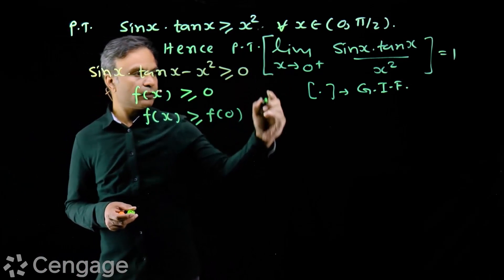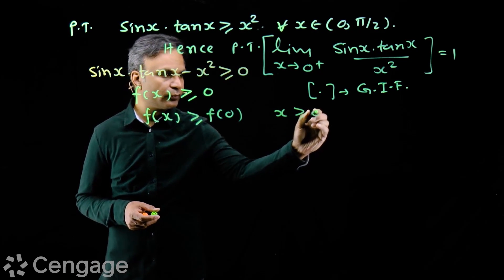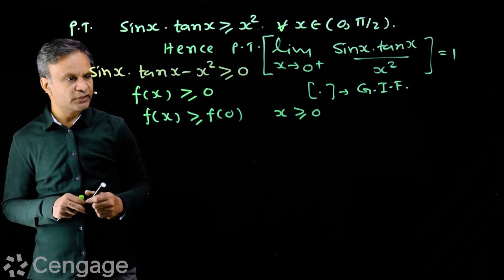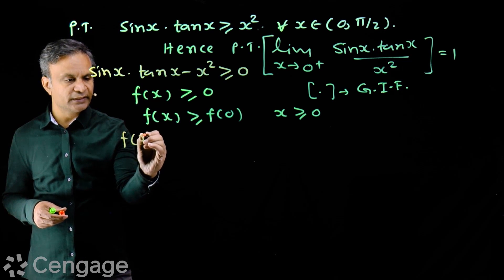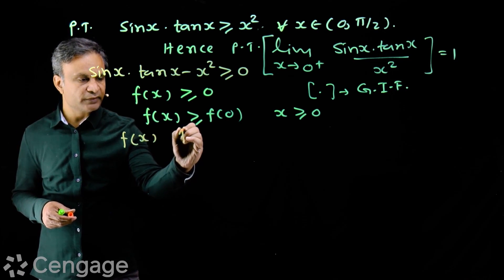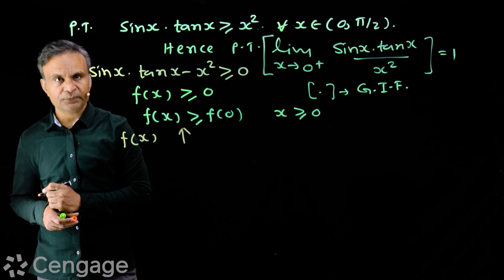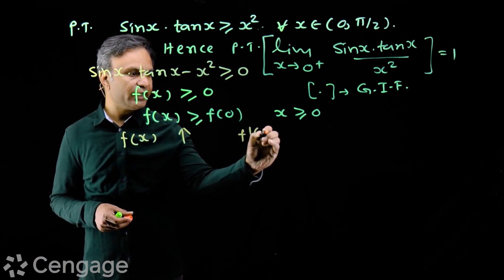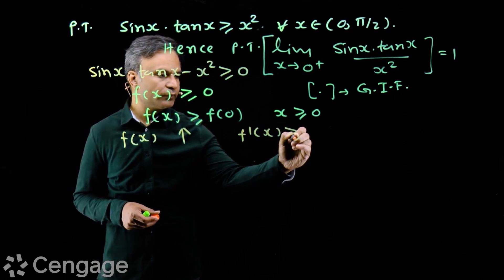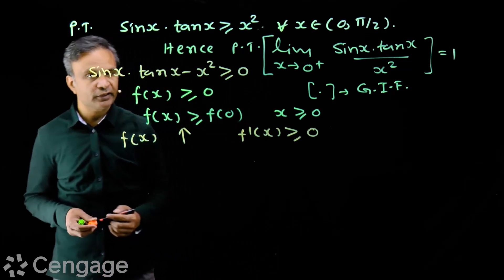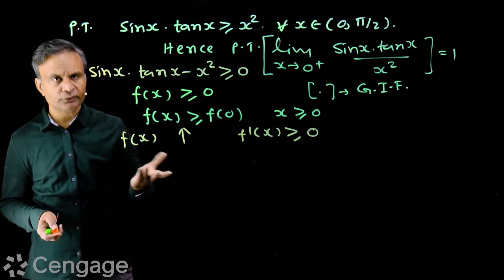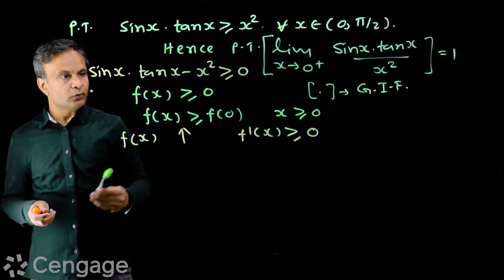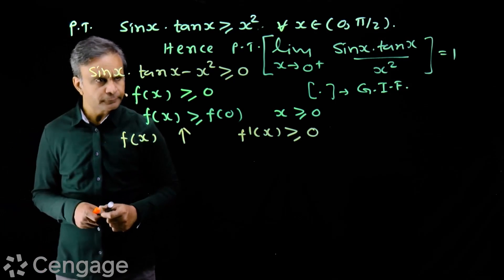That means we have to prove that function f(x) is an increasing function for x ≥ 0. To prove f(x) is increasing, we need to prove that f'(x) is greater than or equal to zero — the derivative must be non-negative. Only then will f(x) be an increasing function.